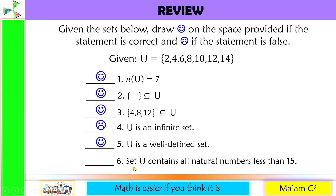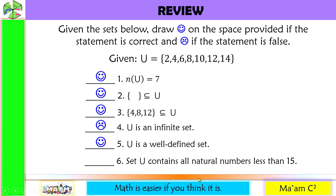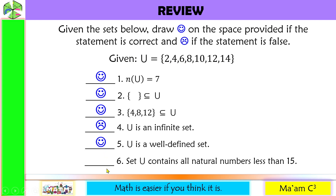Number 6: the universal set contains all natural numbers less than 15. Natural numbers less than 15 start from 1 up to 14, but we do not have 1, 3, 5, 7, and the in-between numbers. So therefore, this is a sad face.